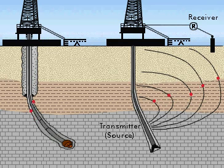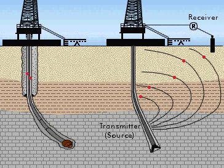In the mud pulse system, signals are sent to the surface with the help of pulses transmitted through the drilling mud. In the electromagnetic system, the drill string is used as an antenna to transmit signals to the surface.